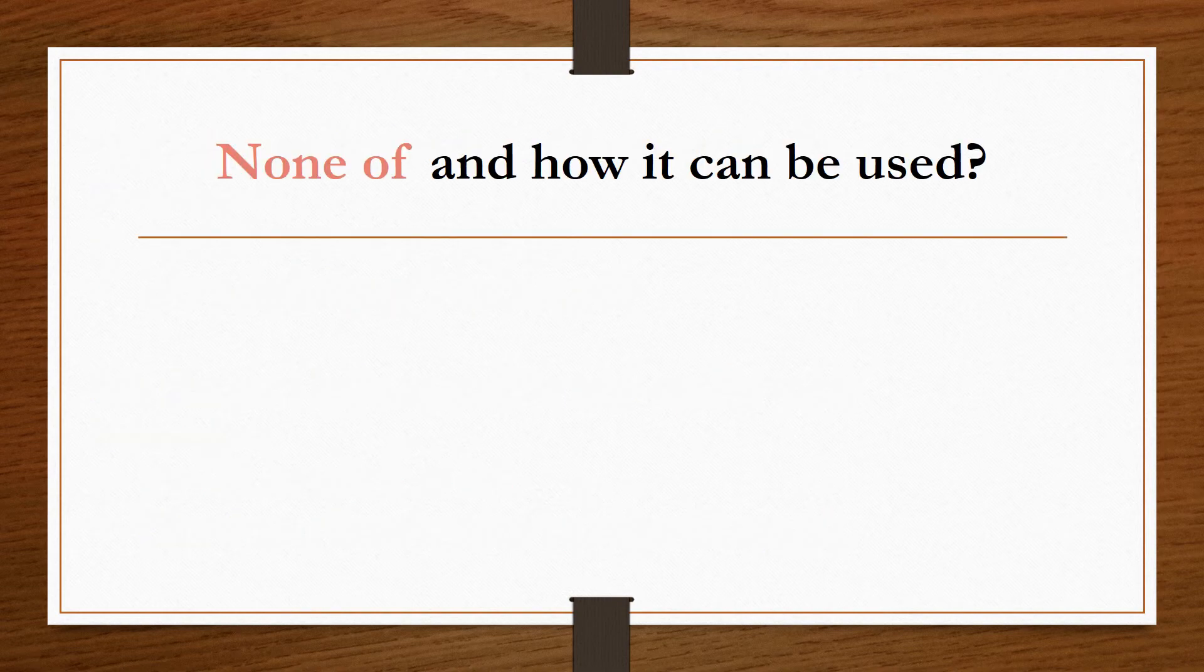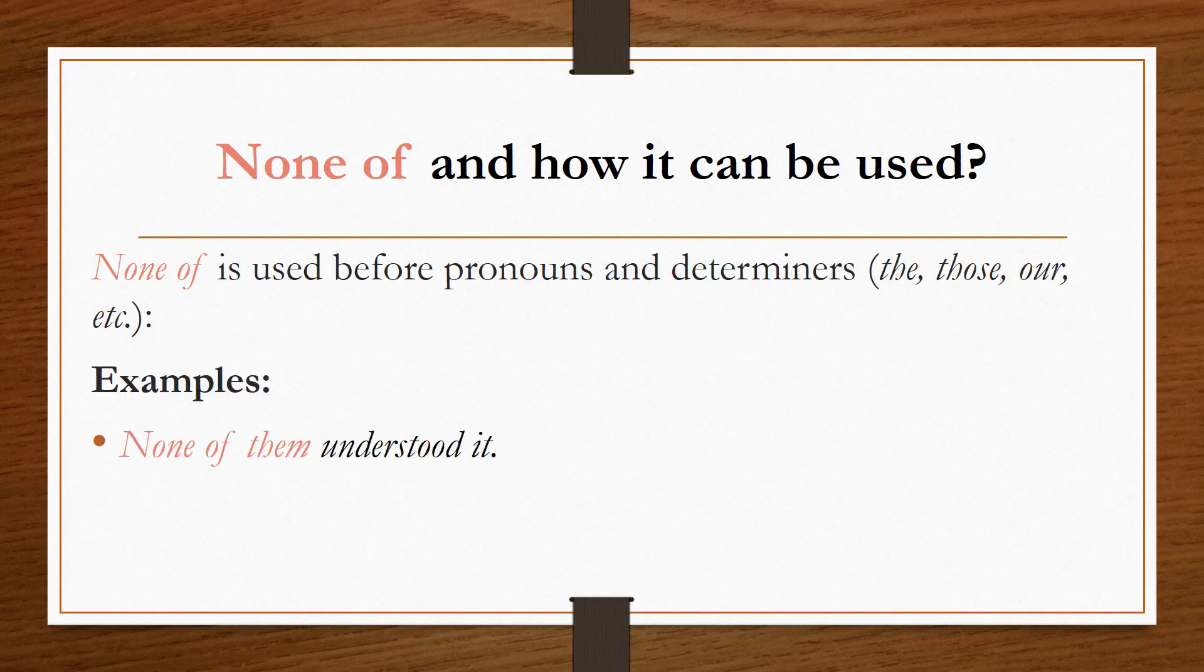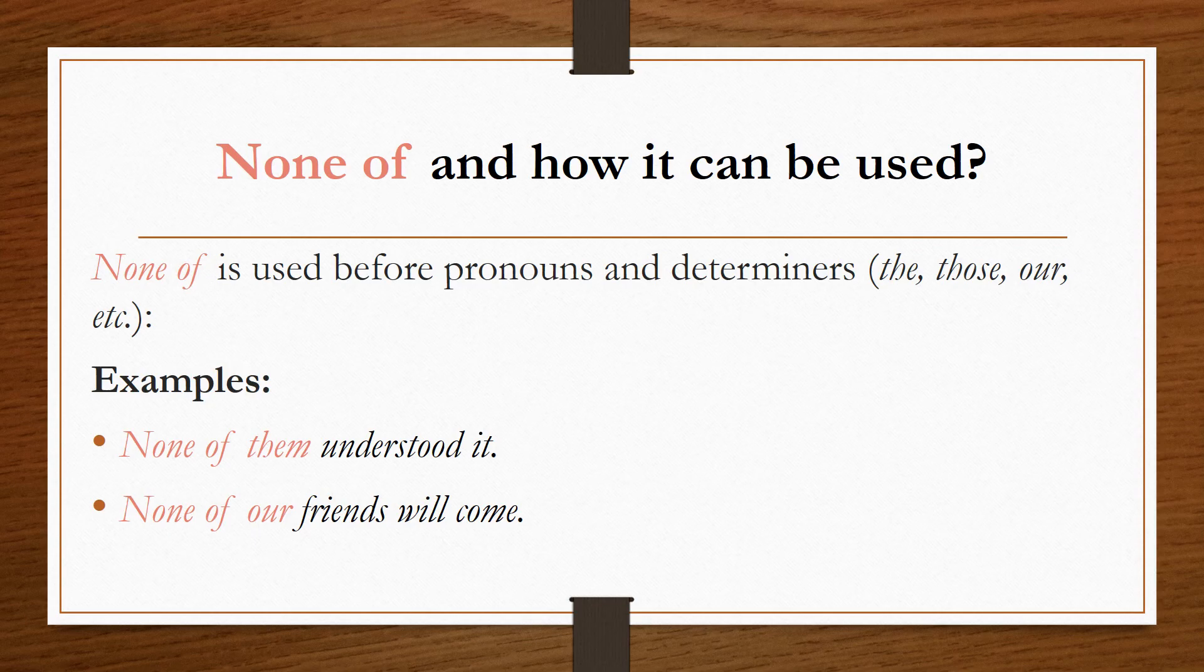And finally, none of and how it can be used. None of is used before pronouns and determiners like the, those, our, etc. For example, none of them understood it. None of our friends will come. None of the lights are working.